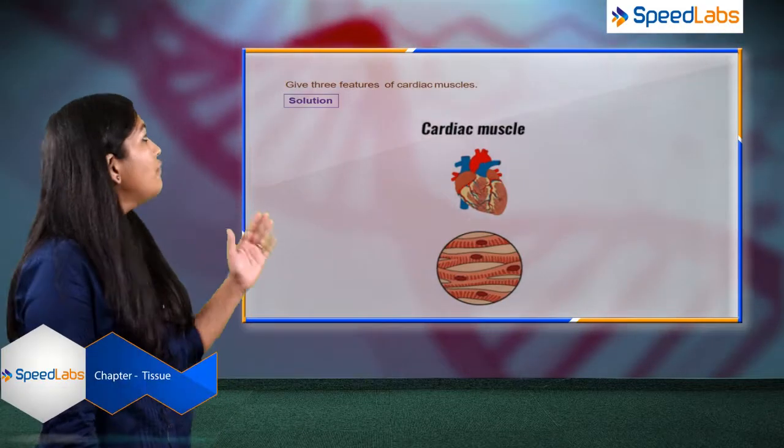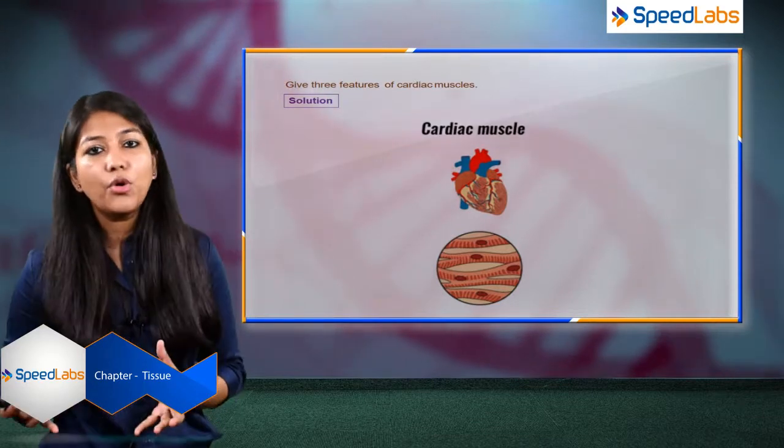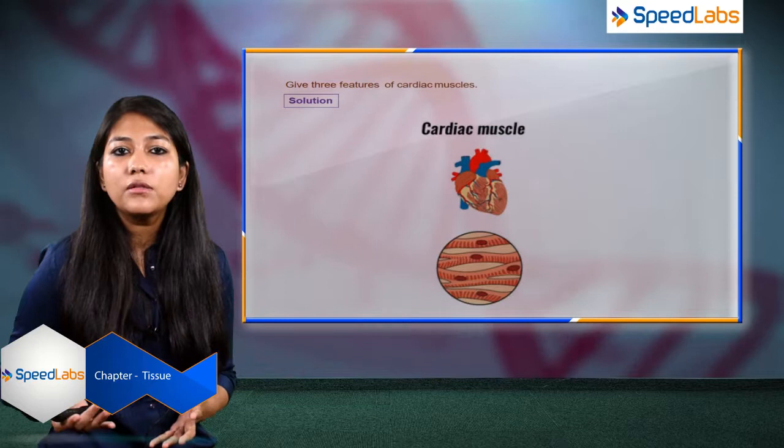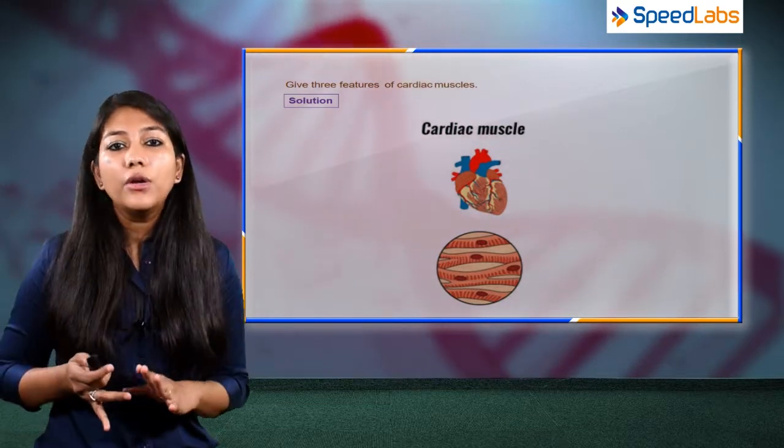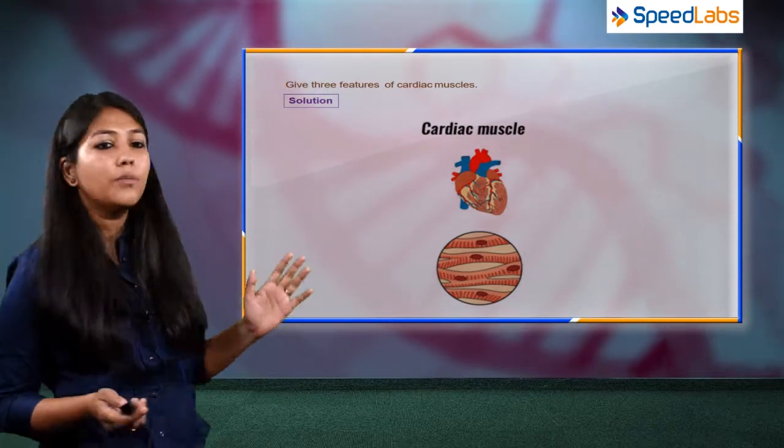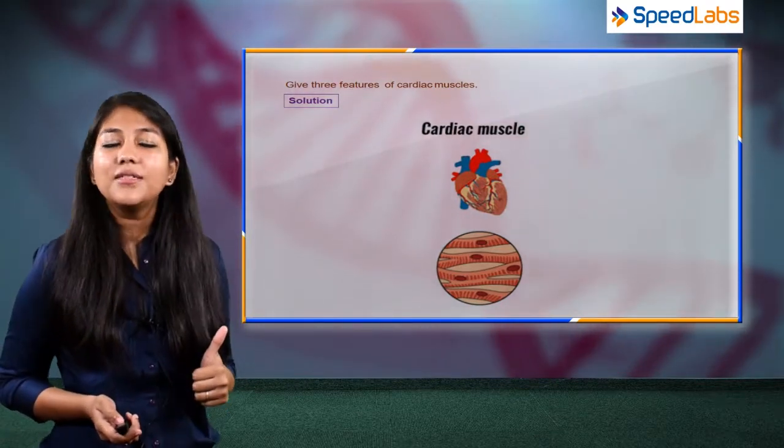The next question is: give three features of cardiac muscles. Now, cardiac muscles are a type of muscle tissue. Let's quickly recall the types of muscles: the striated, the non-striated, and the cardiac muscles. In this question, we are basically discussing about the cardiac muscles.